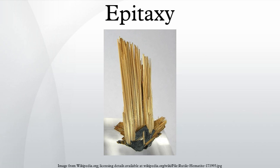Heteroepitaxy is a kind of epitaxy performed with materials that are different from each other. In heteroepitaxy, a crystalline film grows on a crystalline substrate or film of a different material. This technology is often used to grow crystalline films of materials for which crystals cannot otherwise be obtained and to fabricate integrated crystalline layers of different materials. Examples include gallium nitride on sapphire, and aluminium gallium indium phosphide on gallium arsenide, diamond, or iridium.